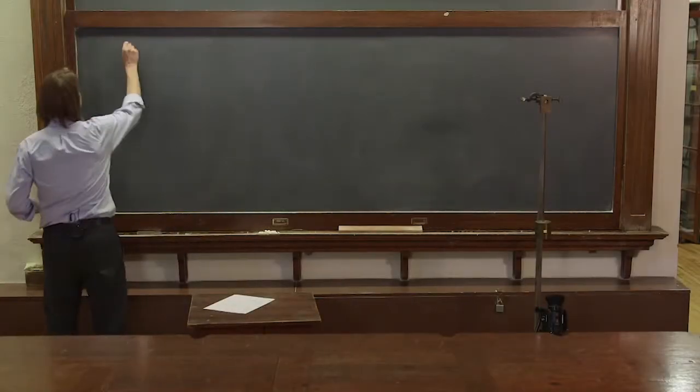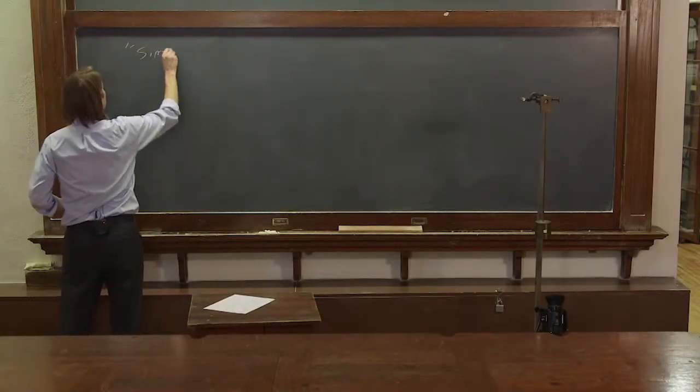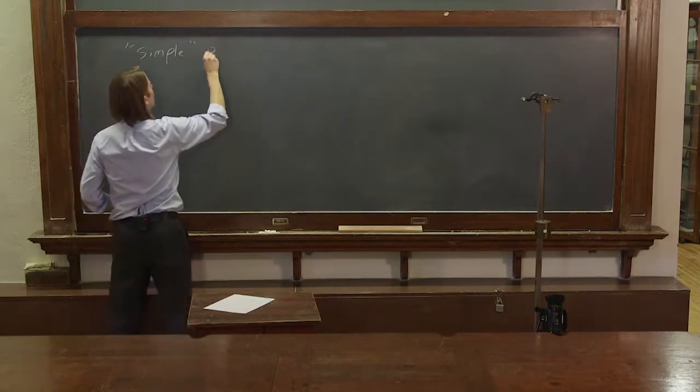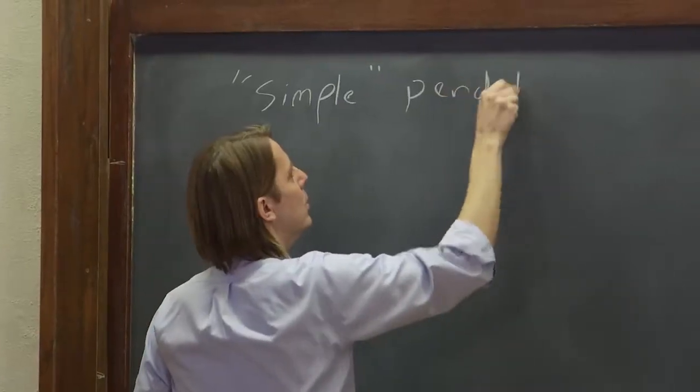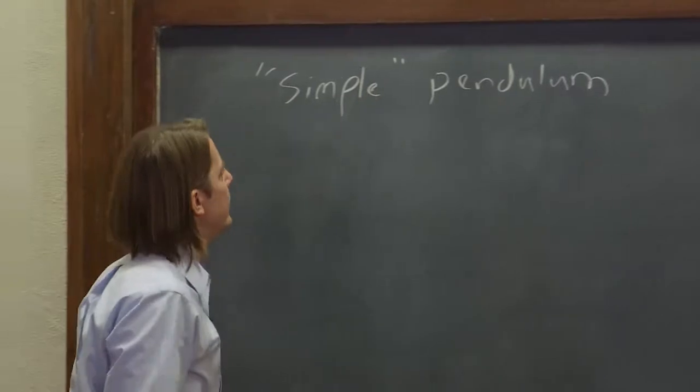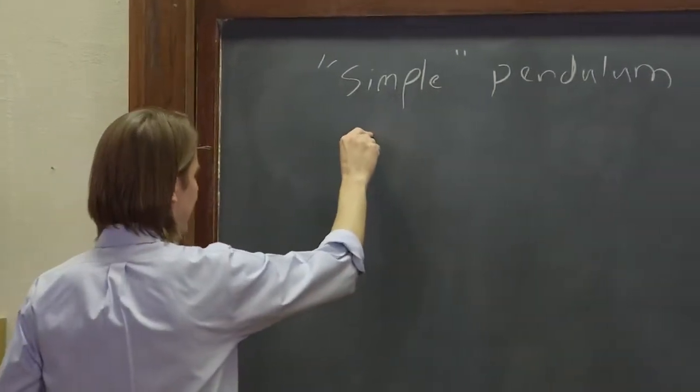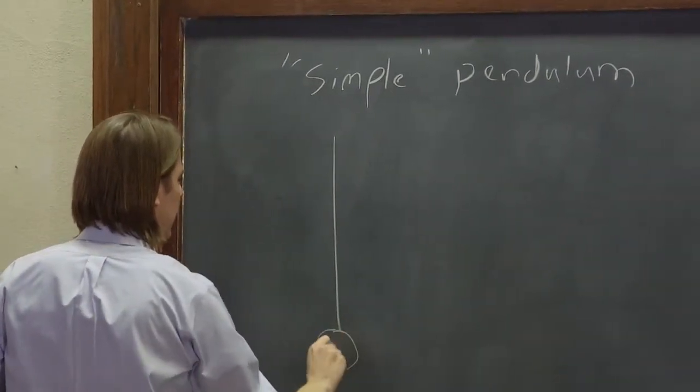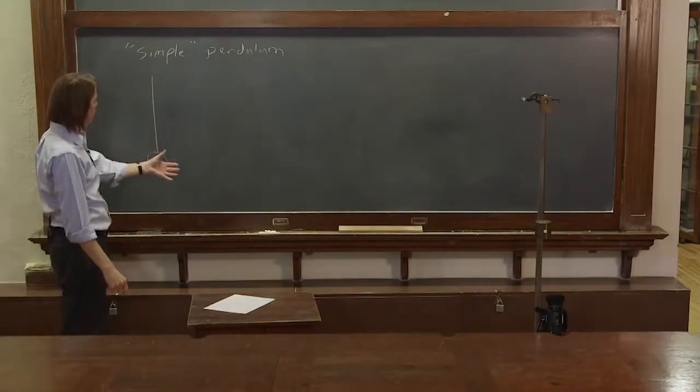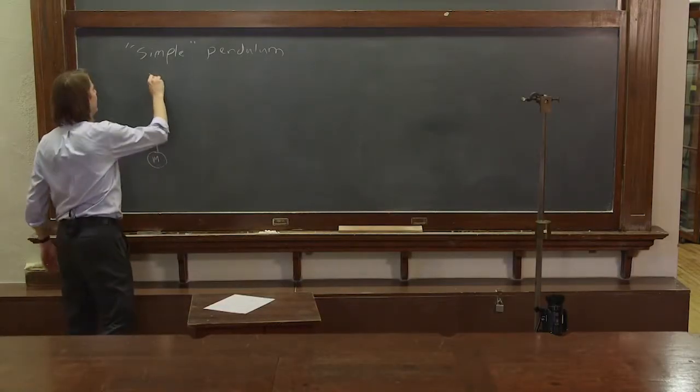Another real oscillator is the simple pendulum. The simple pendulum is really just a mass hanging from a string or a rod. And of course we know it's going to go back and forth if it's pinned right here.